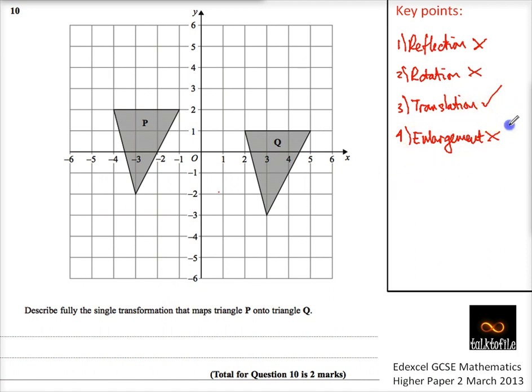And one of the things we need to remember about translations, really important point, is that we need to give it in vector format. So we need to give it as a vector where the horizontal component is written above the vertical component. There's no fraction line between it. It's kind of like coordinates, but stacked on top of each other.